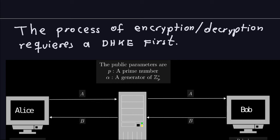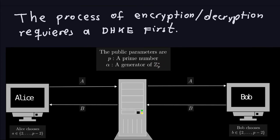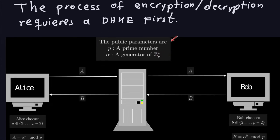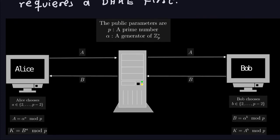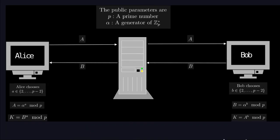The first number has to be a prime number P, which should be large. The second number, which we call alpha, is the generator of Z_P star. This is public and accessible to anyone. On the side of Alice, Alice is going to take a random number between 2 and P-2. Then she does a modular exponentiation — she takes alpha to the power of the number she chose randomly, modulo P — and calls that A.